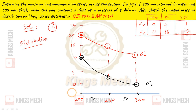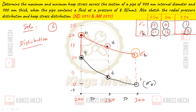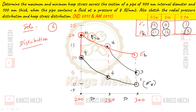So the hoop stress values are: 13 at the outer radius and 21 at the inner radius. 21 is the maximum, around 16 at mid-radius, and 13 at the outer. The radial stress distribution is steep. The distribution shows sigma_H decreasing from 21 to 13 going outward, while sigma_R goes from 8 towards 0.